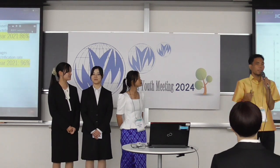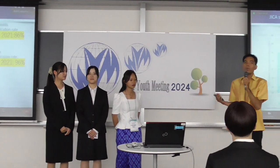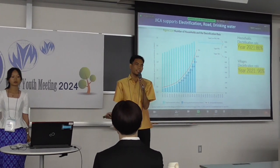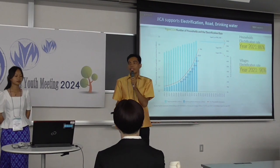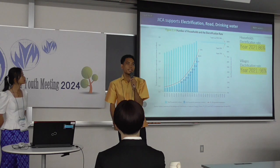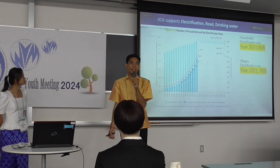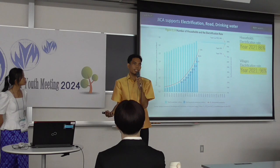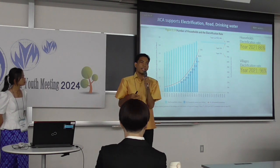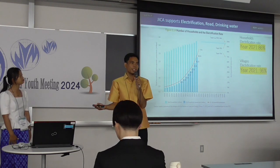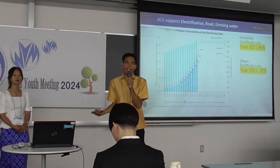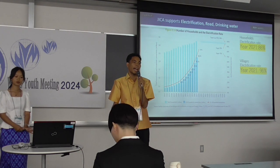After the severe Pol Pot regime, we tried so hard to rebuild our country to be great again. At that time, JICA came to support us. As you can see here, this is information about electrification access. In 2003, there was very low electrification access, but now it's almost 100%. Thanks to JICA for supporting us.